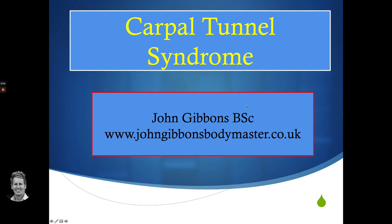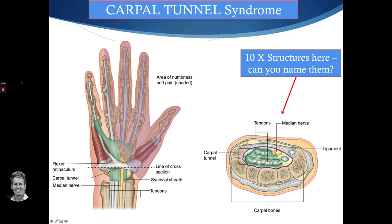Let's have a look at this area. The carpal tunnel — you can see there is a tunnel formed around this area, and structures penetrate through it. The roof of the tunnel is a ligament called the flexor retinaculum, also medically known as the transverse carpal ligament. It runs from the scaphoid and trapezium across to the pisiform and hamate, forming the top of the tunnel.